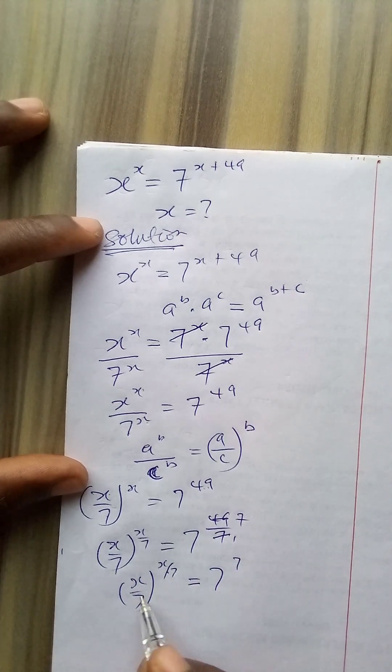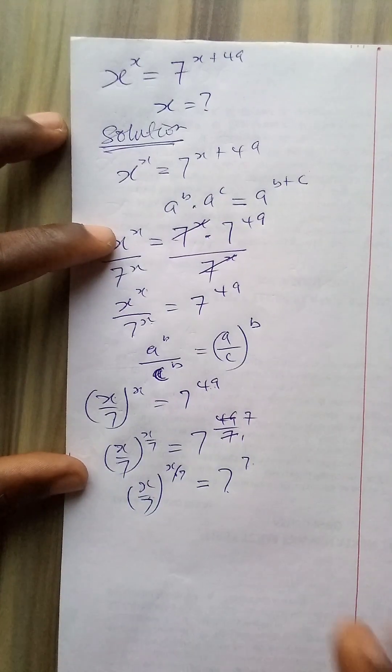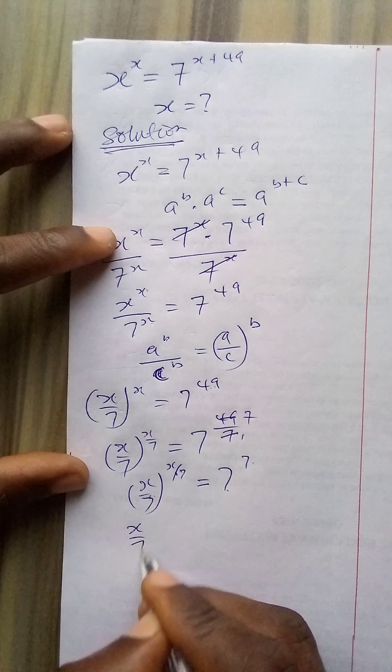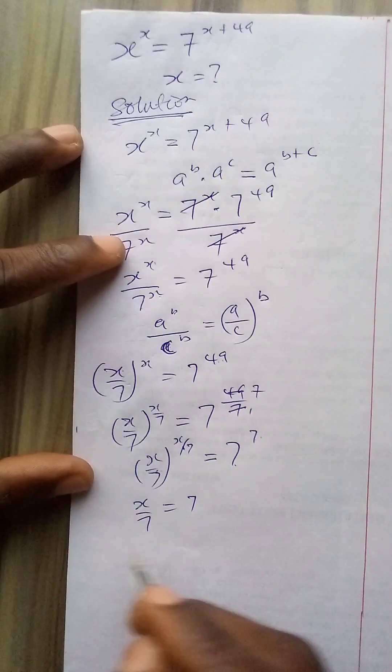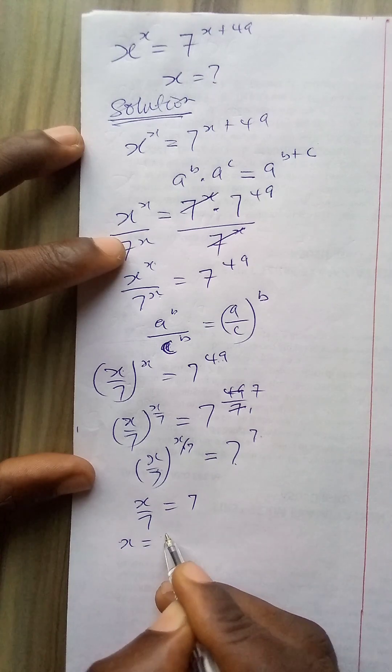I have the base and the power being the same, and the base and the power being the same here. Therefore x over 7 equals 7. And if I cross multiply, x equals 7 times 7 which is 49.